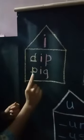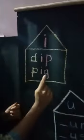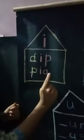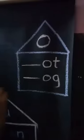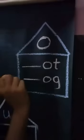D, I, P — dip. P, I, G — pig. In the same way, when I add P in O family words, the word gets completed.